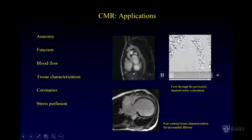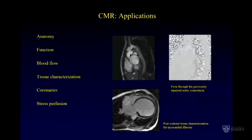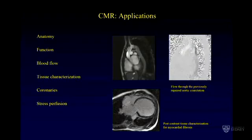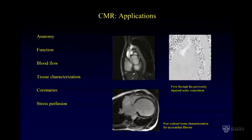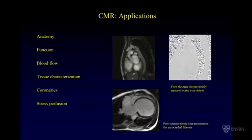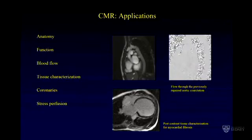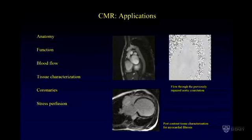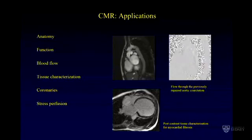Turning to the applications of CMR in the assessment of adult congenital heart disease, it is very useful to look at anatomical structures, function, blood flow, tissue characterization, coronaries, and finally stress perfusion.